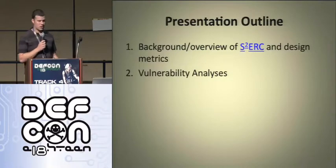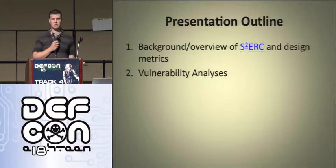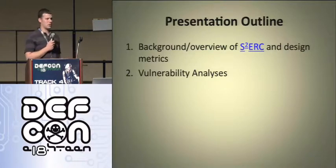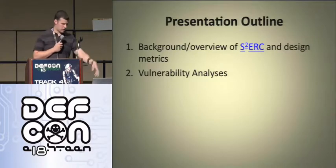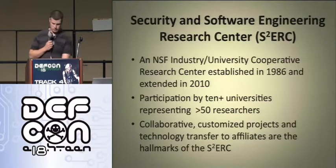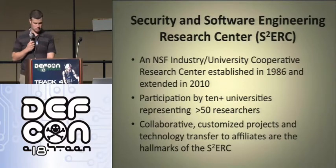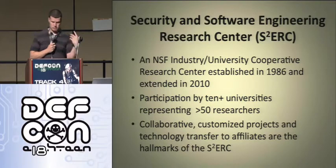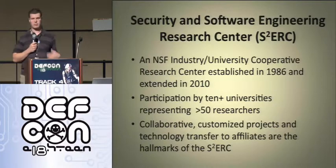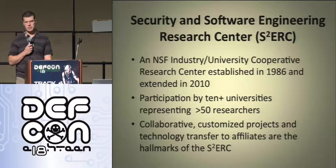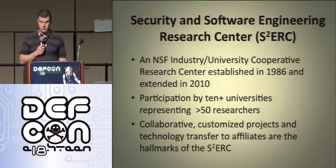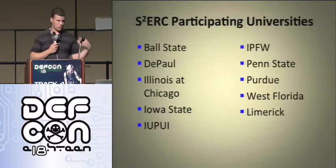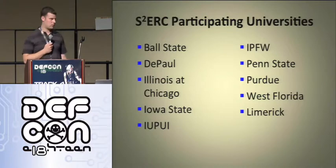So the presentation outline: we're going to do a quick overview of S-squared ERC. It used to be CERC — the Software Engineering Research Center — and now it's the Security in Software Engineering Research Center. Then we'll get into the actual metrics and vulnerability analysis. It's a National Science Foundation University Cooperative Research Center, funded by them, with ten-plus universities and fifty researchers. It's all collaborative — companies and government agencies sponsor research projects for us.